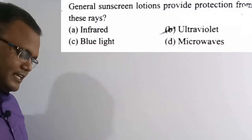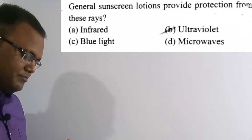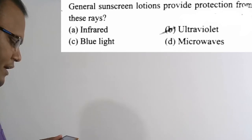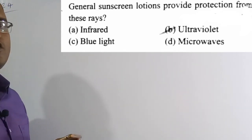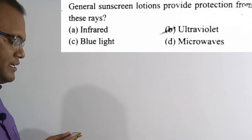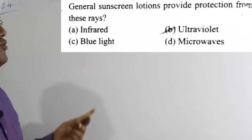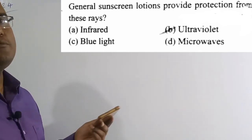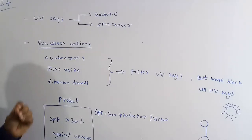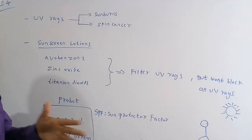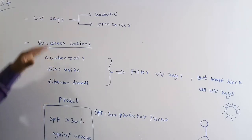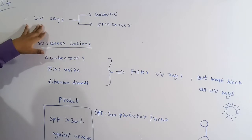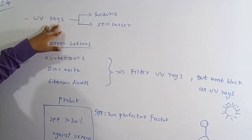Now we are going to solve the 24th question. General sunscreen lotions provide protection from which rays? Option A: infrared rays. Option B: ultraviolet rays. Option C: blue light rays. Option D: microwaves. The correct answer is option B — ultraviolet rays. Sunscreen lotions protect our body from ultraviolet rays.